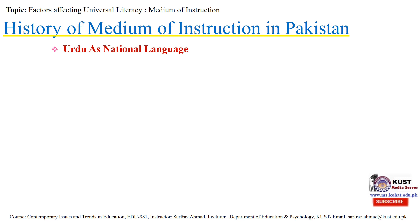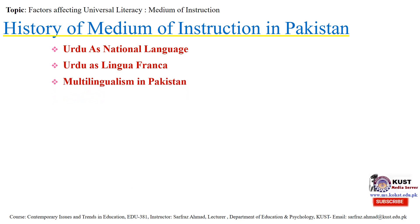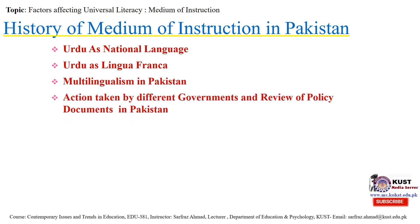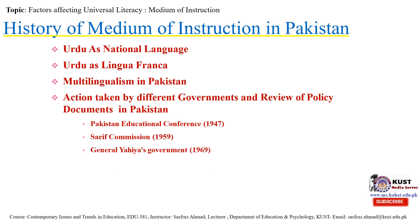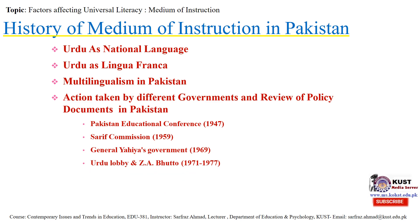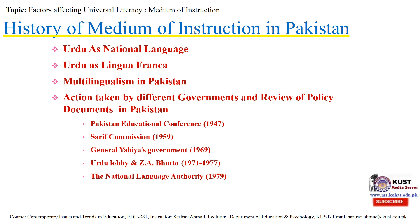There have been actions taken by different governments as seen in various policy documents. Key events include the Pakistan Educational Conference in 1947, the Sharif Commission in 1959, General Yahya's government in 1969, the Urdu lobby under Zulfikar Ali Bhutto from 1971 to 1977, the establishment of the National Language Authority in 1979, and the introduction of A and O level examinations in 1983.